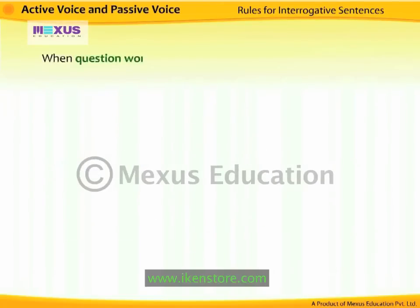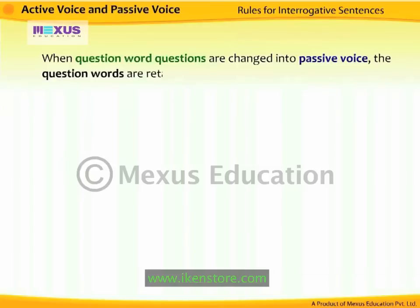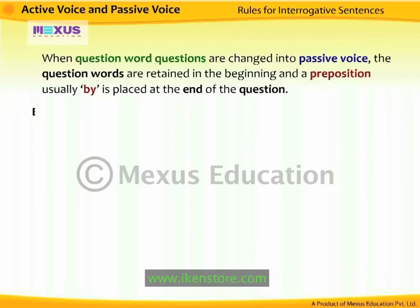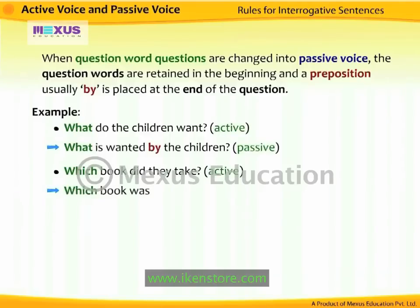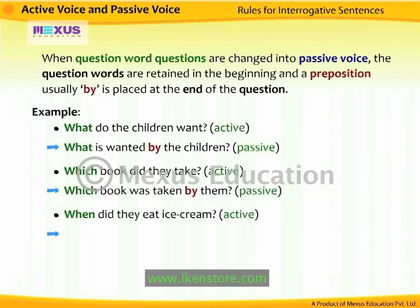When question-word questions are changed into passive voice, the question words are retained at the beginning, and a preposition — usually 'by' — is placed at the end of the question. For example, 'What do the children want?' becomes 'What is wanted by the children?' 'Which book did they take?' becomes 'Which book was taken by them?' 'When did they eat ice cream?' becomes 'When was ice cream eaten by them?'